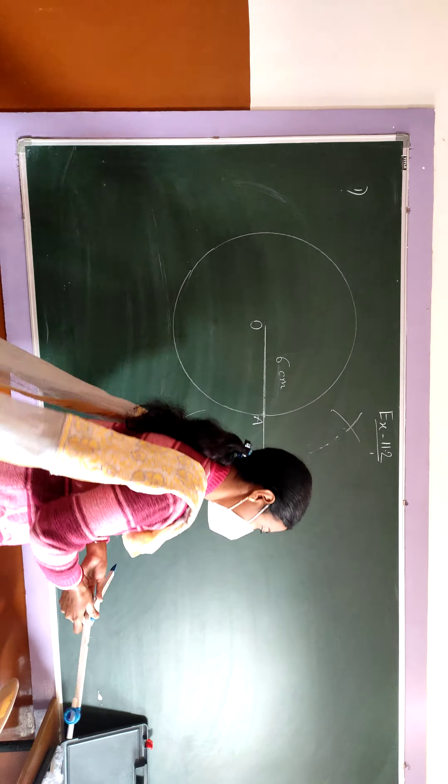Join the two intersection points — name them X and Y. This gives the midpoint of OP. That midpoint is called M. So M is the midpoint of OP, meaning MO equals MP.